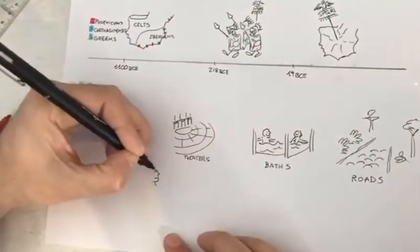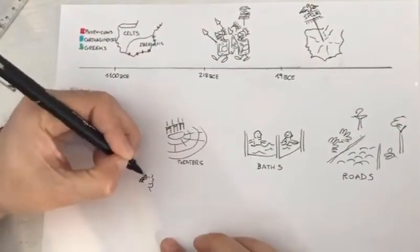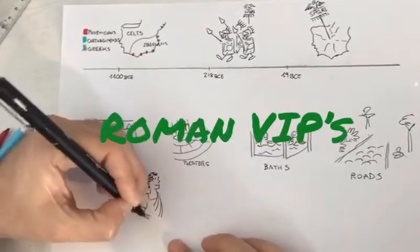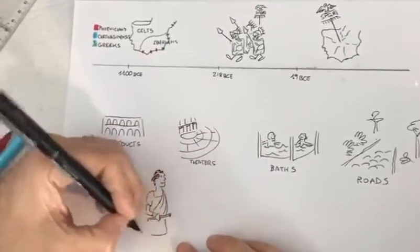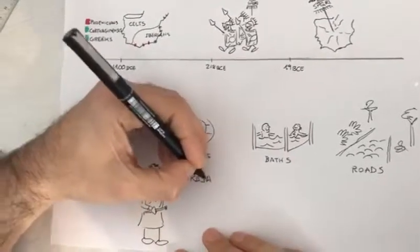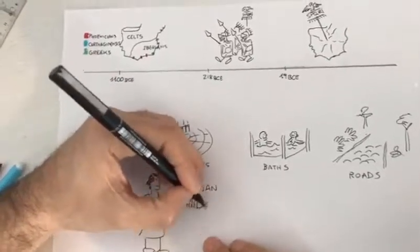Some important figures were born on the Iberian Peninsula, even some emperors of the Roman Empire, just like Trajan and his adopted son Hadrian.